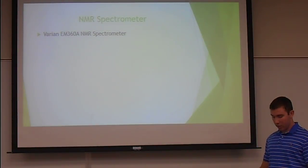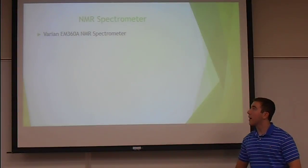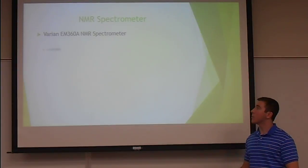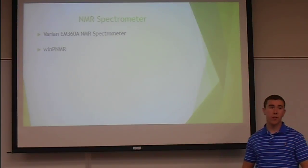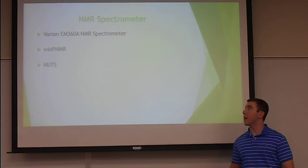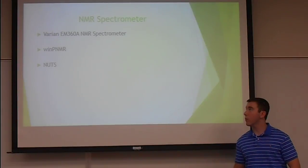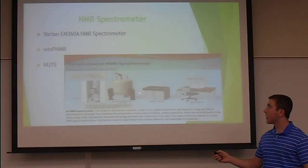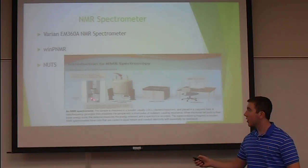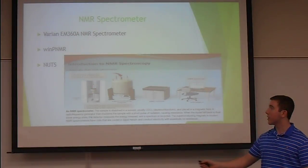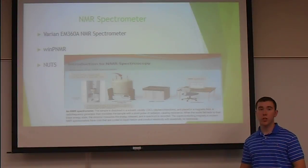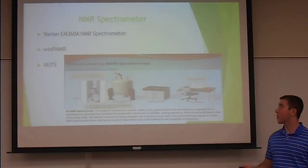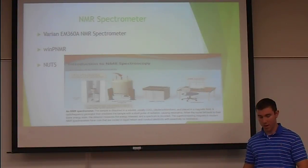The NMR spectra will be obtained using a Varian EM360A NMR spectrometer that uses WIN-PNMR for the interactive software and NUTS for the analyzing software. The sample will be placed inside, where it will begin to spin and take four scans. The average spectra will be sent to the computer, where a printout can be made.